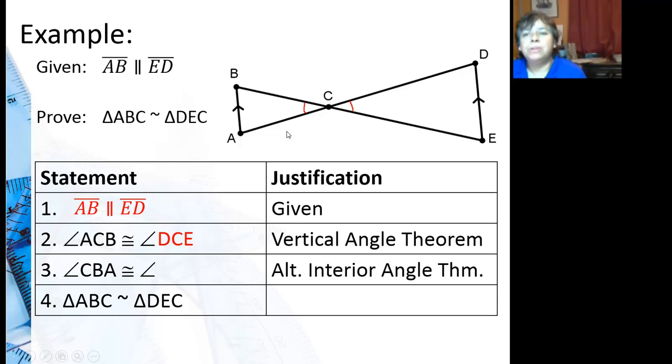Then we have alternate interior angles. I know one of them is CBA because it's listed in the proof. Then the question is what other angle goes with that? Well, if I were to go ahead and get a highlighter, let's go ahead and highlight my parallel lines here.